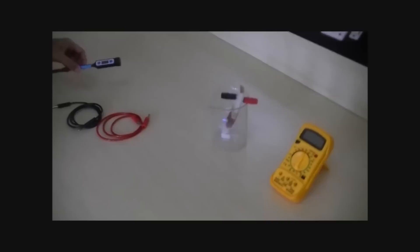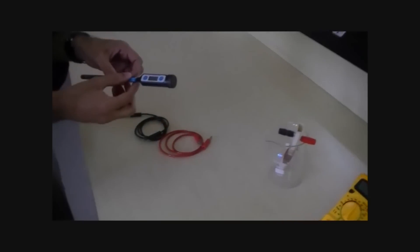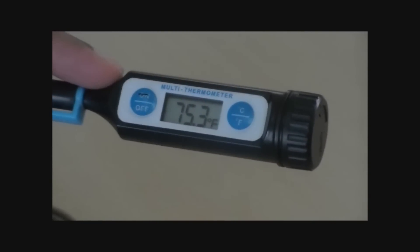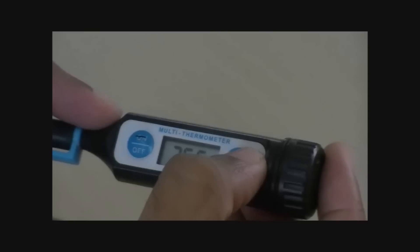The digital thermometer is used to measure the temperature reading. Here we can also measure the temperature in degree Fahrenheit. For this particular experiment, we will be measuring the temperature in degree centigrade. We shall place the digital thermometer in the beaker.